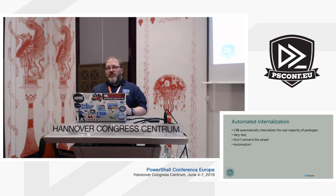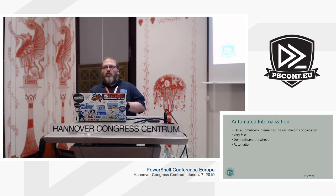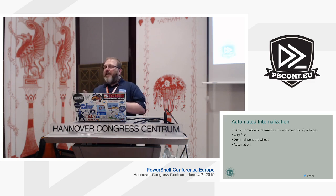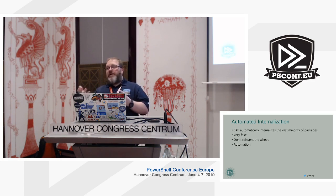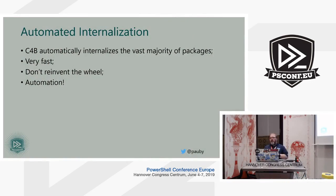The automated internalization process that Chocolatey for Business does will internalize the vast majority of packages. The exceptions are Oracle packages — if anyone's worked with new versions of Java or jumped through the hoops to download Oracle products, you'll understand why getting that downloaded programmatically is quite difficult. The Chocolatey for Business automatic package internalizer can't jump through those hoops. It does the vast majority of other packages within about five to ten seconds, depending on how big the installer is — it's incredibly fast, much faster than doing it manually.